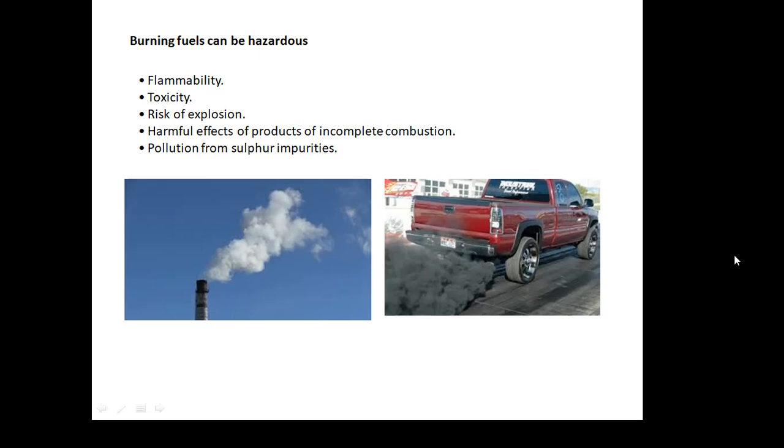And there is pollution. Pollution from soot, pollution from carbon dioxide which is a greenhouse gas, but also, if it's something like oil or coal, a fossil fuel which contains sulfur, then oxides of sulfur can cause acid rain.